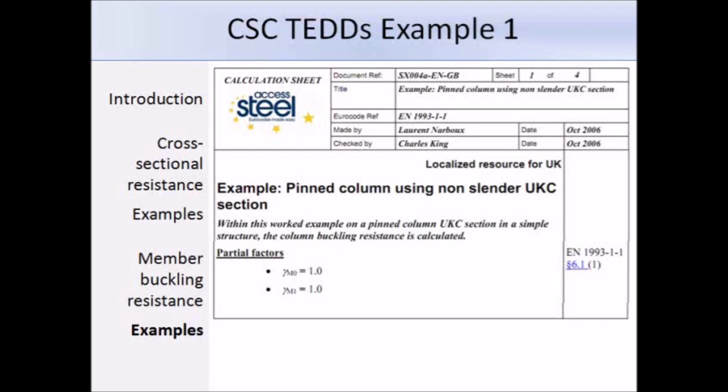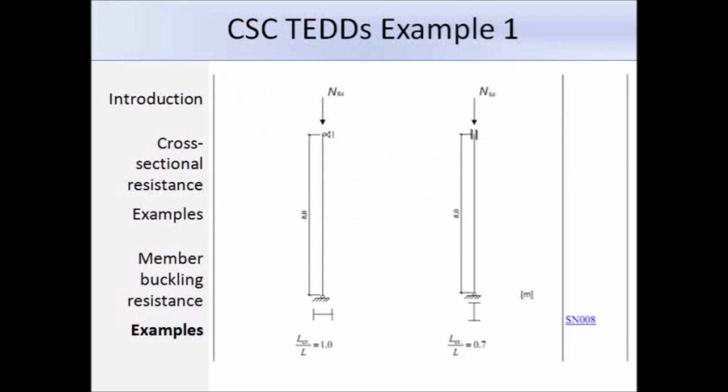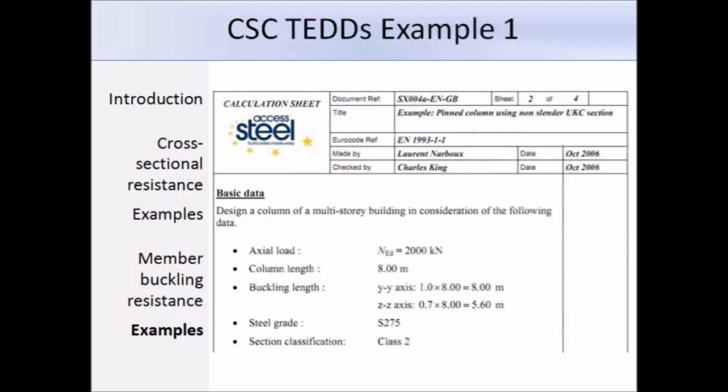Here is a diagram of our column. On the left we're looking along the major axis y, and the end conditions are both pinned, so the effective length factor is 1. But on the right we're looking along the minor axis z, and the effective length factor is 0.7. Here's some basic data: we have the design axial load of 2000 kN, then the buckling length about both axes. We multiply the column length by the effective length factors, and the steel grade we're using is S275, and our section is class 2.